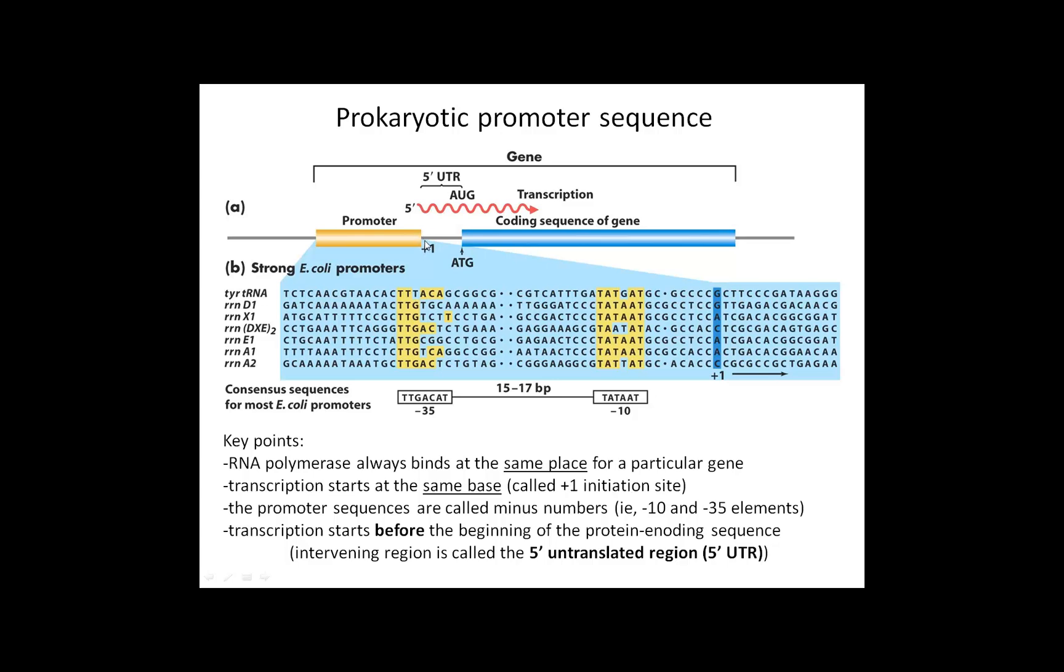Shown in this figure right here after the promoter. Then there's a little intervening sequence where you'll get RNA, the five prime UTR. And then this is the beginning of the protein coding region, the ATG that codes for methionine.